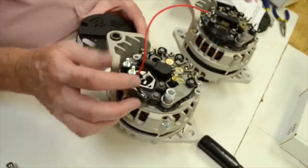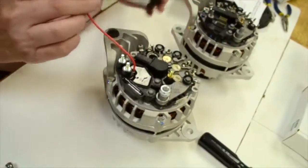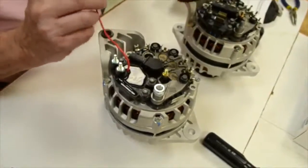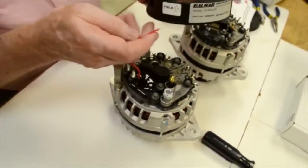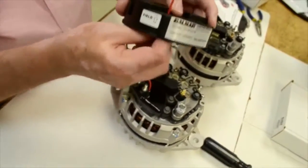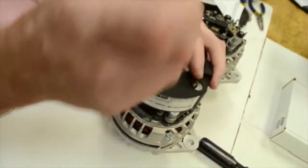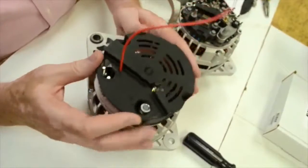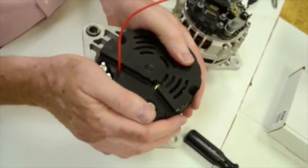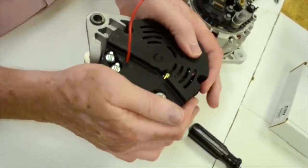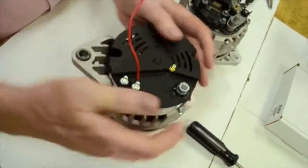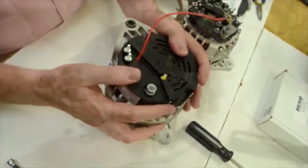Once you've installed the regulator and tightened the three screws, you now install the plastic cover. The red wire is your sensing wire. We have drilled a hole in the cover for that. You simply take, pull that wire through that hole, and then slide your cover on, lining the mounting bolts up with the holes in the alternator. It takes a little bit. You want to make sure it's down tight and snug.